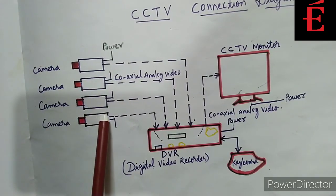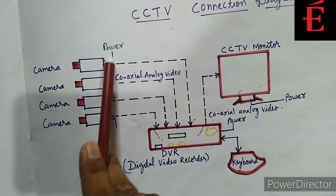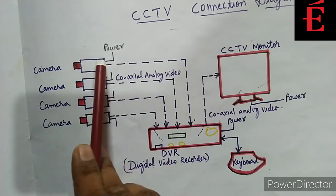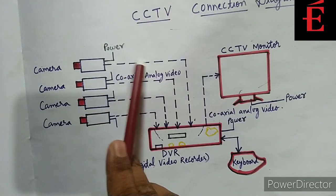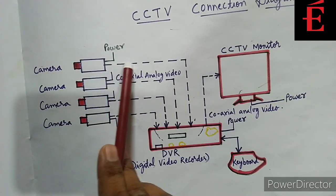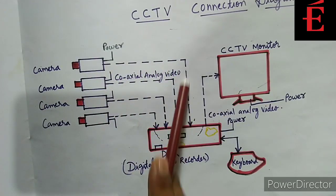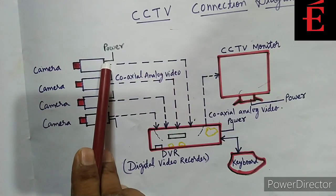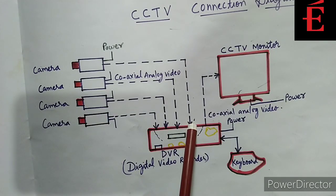Every CCTV camera has two connections or two connectors. One is for power supply in — you can see a DC connector here — and one is for video out, a connector for video out. This CCTV cable, also called coaxial cable or 3+1 cable, has two ends. One end we connect a BNC connector to the camera, and the other end we connect a BNC connector to the DVR channel or port.